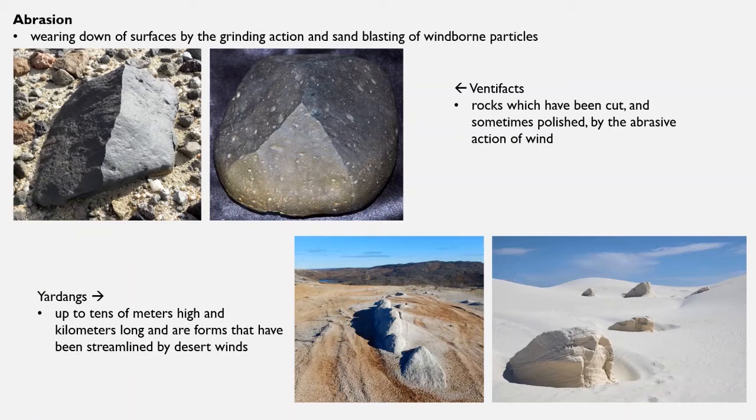A larger feature that you might see in an actual landform is a yardang. A yardang can be tens of meters high and kilometers long. And they get hit by this wind with these particles in it, and that causes these yardangs to be very streamlined by the desert winds. That's why they look the way they do in those bottom pictures where they're kind of narrow and long, tall and long.